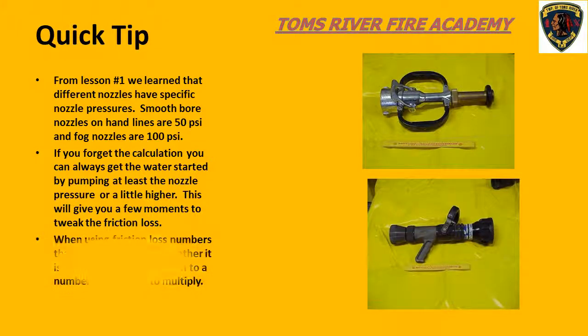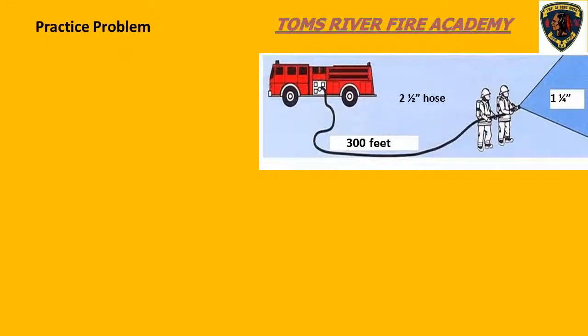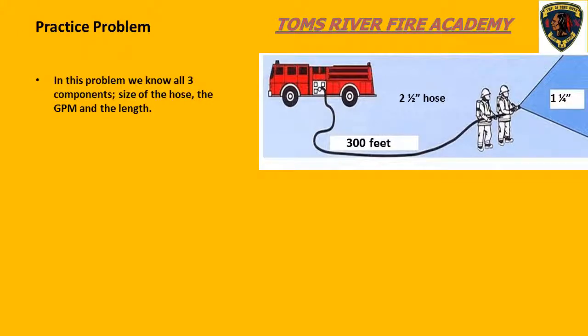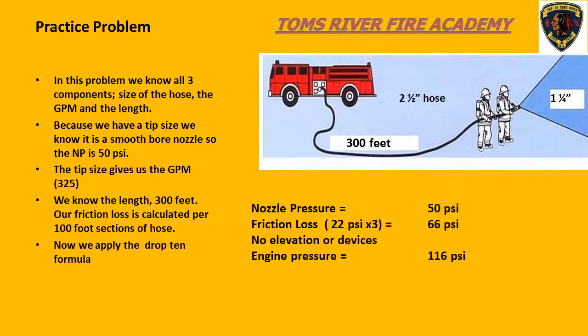Try this practice problem. We know the flow and the size of the hose. The flow is 325 gallons per minute. Using the drop 10 method, we get a friction loss of 22 PSI. There are three 100-foot sections of hose, so the friction loss is 22 PSI for each section. The total friction loss is 66 PSI. The nozzle pressure is 50 PSI. Add these numbers together and you get an engine discharge pressure of 116 PSI.